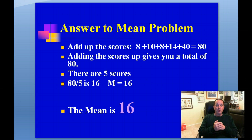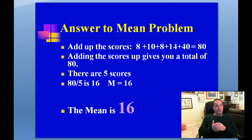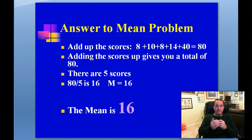How many scores are there in the distribution? We have 8, 10, 8, 14, and 40 — that's 5 total scores. So we take our total summation of 80 divided by the total number of scores, 5. 80 divided by 5 is 16. The mean in our distribution is 16.